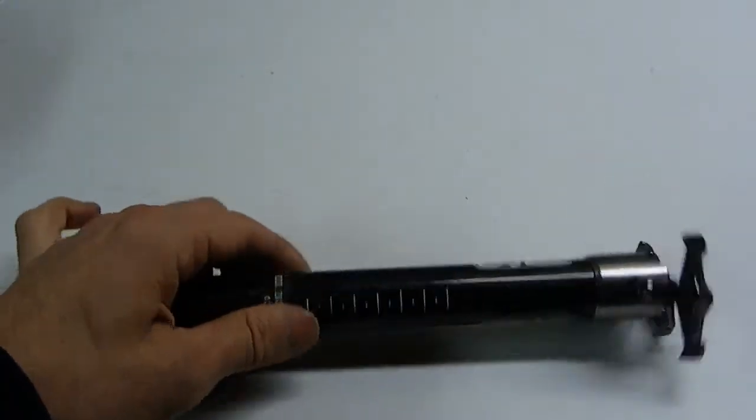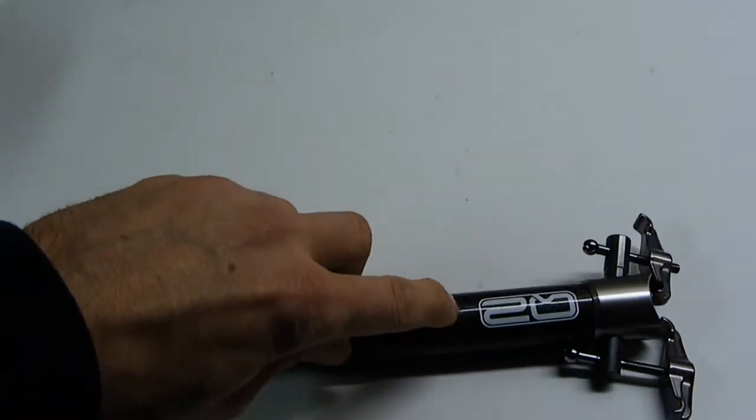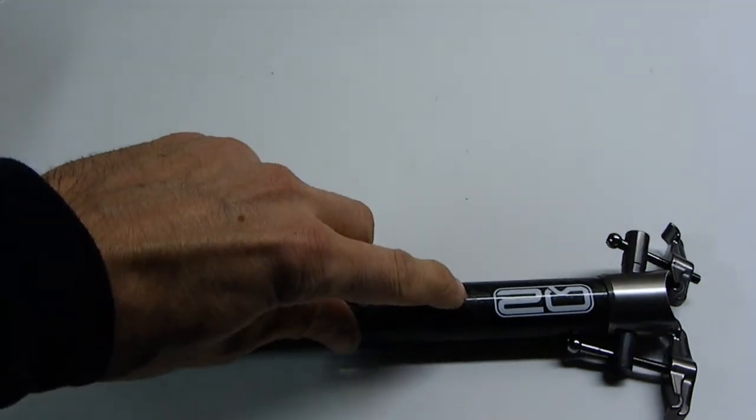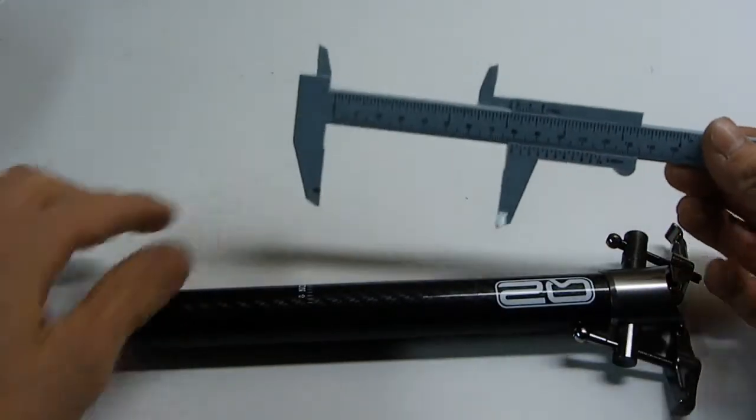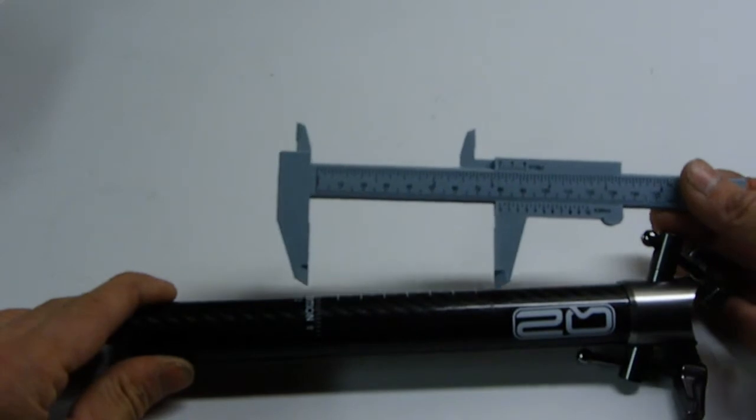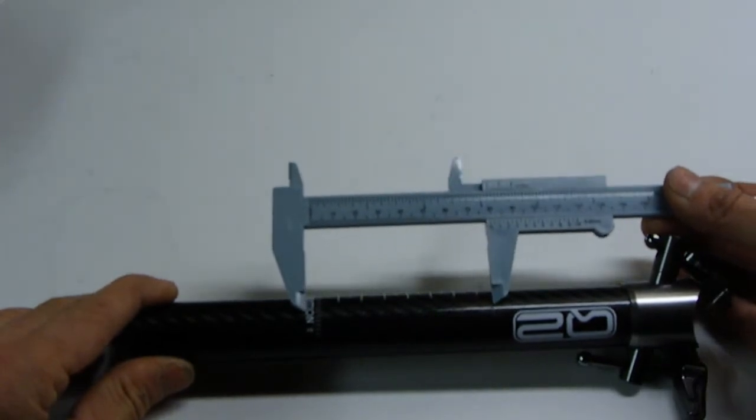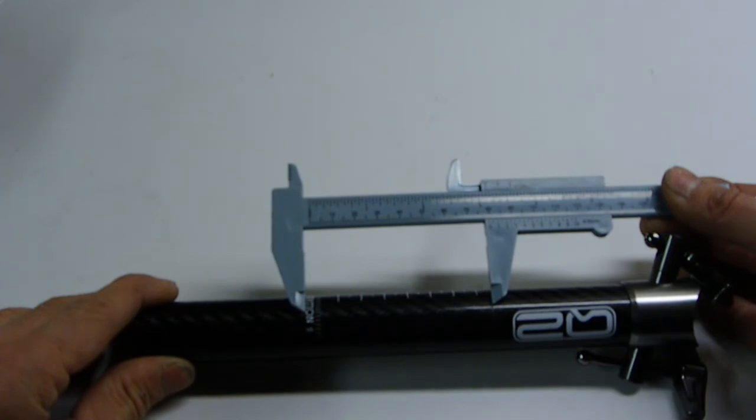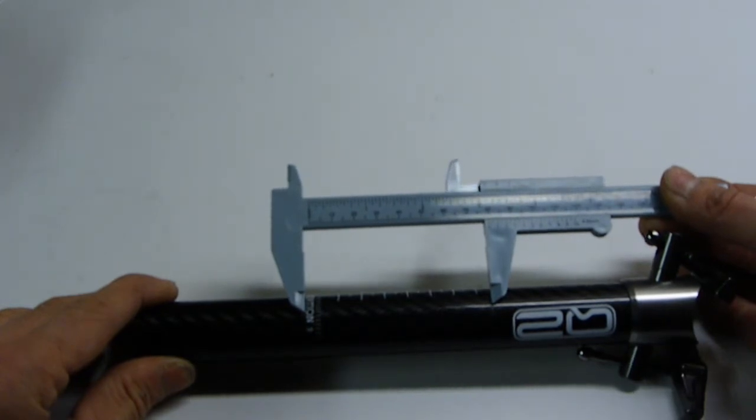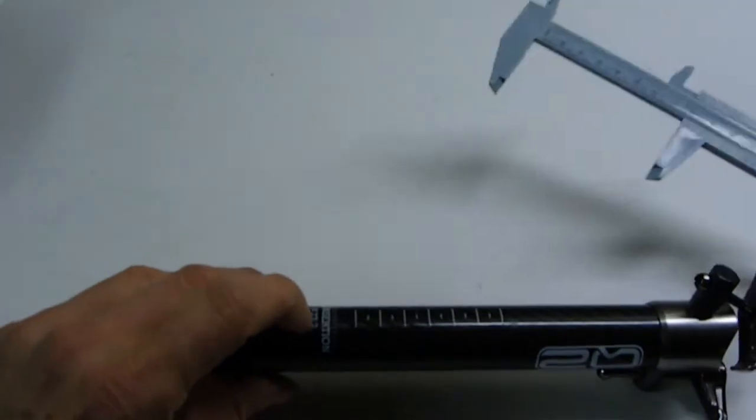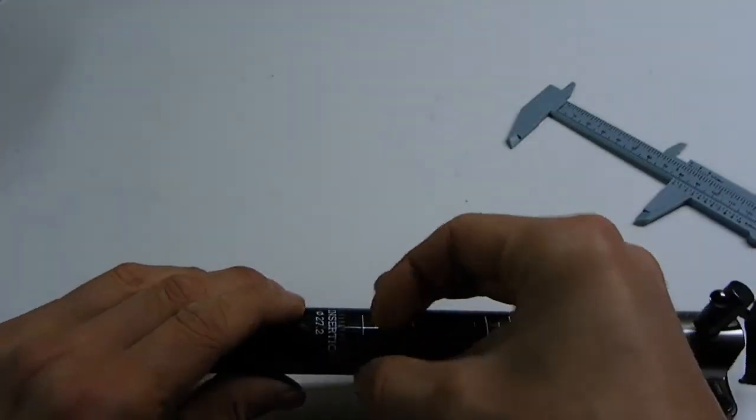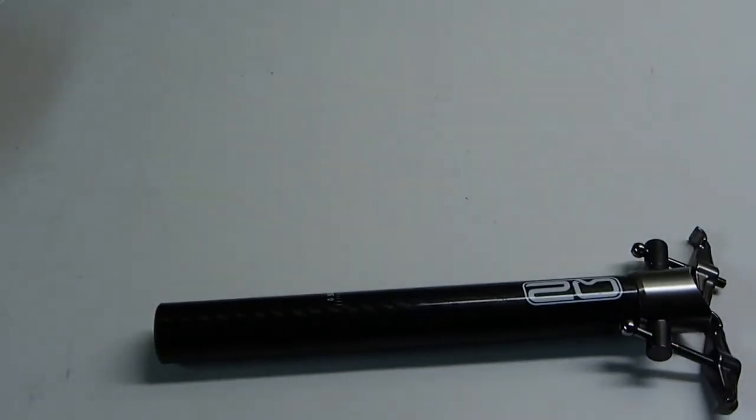It might be a little hard to see on the video here, but there's a mark where I've been riding around with my seat post. So I'm going to assume that from that mark, I'm going to be three inches and a sixteenth down into the seat post. It looks like I can go ahead and cut it off just under this minimum insertion text. So I'm going to do that now.